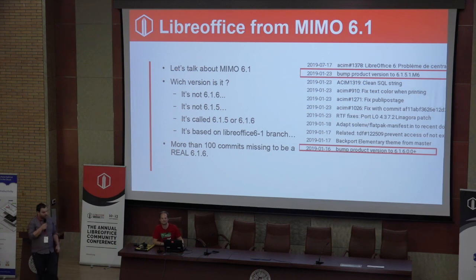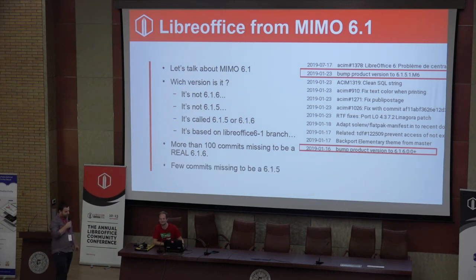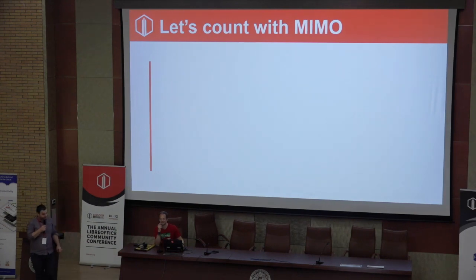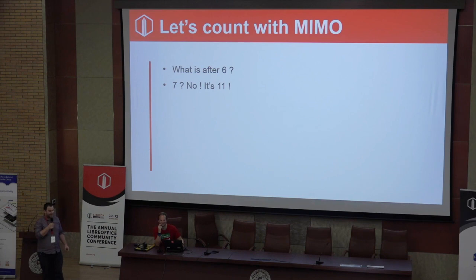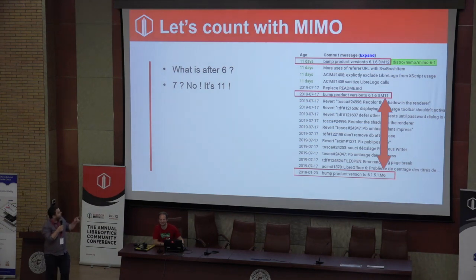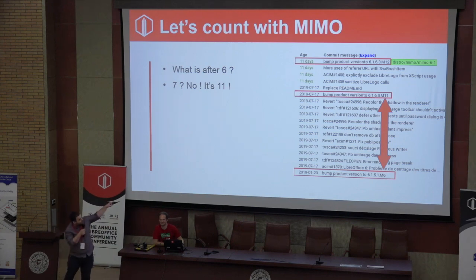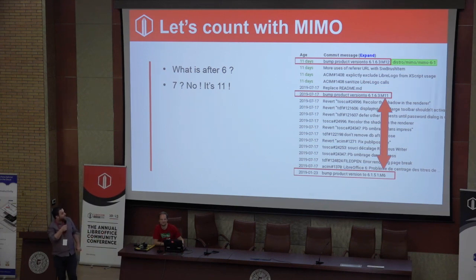So more than 100 commits are missing to be a real 6.16. Let's count with MIMO — is there someone great at mathematics? What comes after 6? Wrong answer, sorry Lionel — it's 11, of course. So you have the 6.151 M6, and just after that, with some commits randomly put in, you have 6.163 M11.